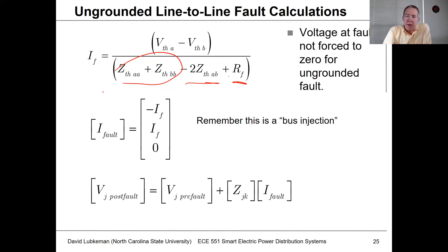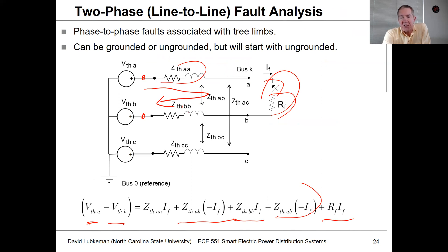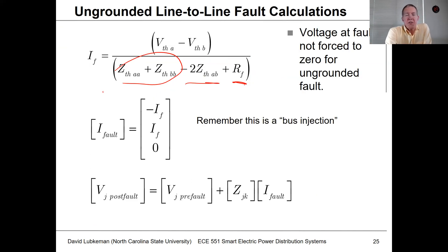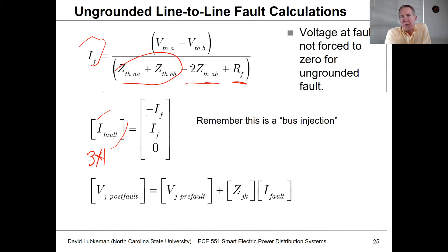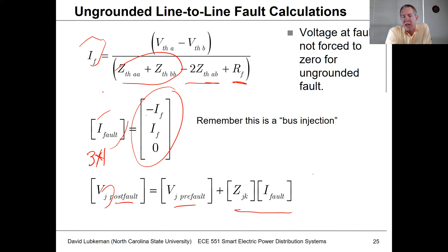One thing to point out for this particular scenario: since this fault is not grounded — since it's line-to-line — the voltage at A does not go to zero; it's actually going to have some non-zero value. If we take the results for the individual fault current and plug them into a three-by-one matrix to represent the injected current I_bus, the current flowing through phase A looks like minus IF and the current for phase B looks like IF. If I have a bus J and I want to get the post-fault value, I can take the pre-fault value and add to that Z_JK times this three-by-one fault matrix, which enables me to get the change in voltages at the non-fault buses.